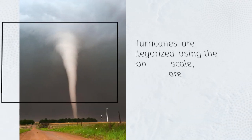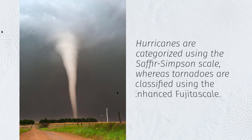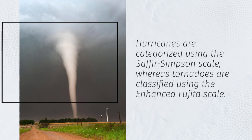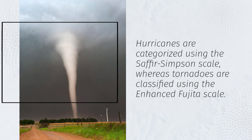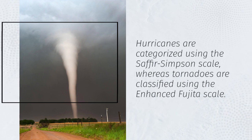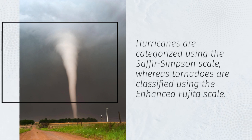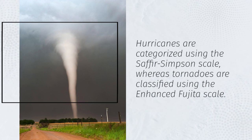Hurricanes are categorized using the Saffir-Simpson scale, whereas tornadoes are classified using the Enhanced Fujita scale.